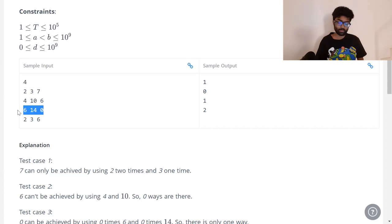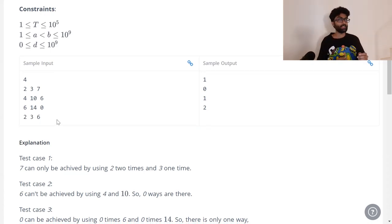Six, fourteen, zero. If I use zero sixes, zero fourteens, I get zero, so I've got one possibility. And finally, two, three, six. If I use two, two, two I get six. If I use three, three I get six, so there are two possibilities.